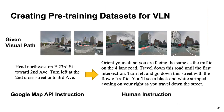The objective is to create a pre-training dataset for VLN where the model can be pre-trained for generalized representation learning for this task, and then fine-tuned on specific VLN datasets for a performance boost. Given a visual path, we want to transfer Google Map API instructions like 'head north on East 23rd Street towards 2nd Avenue' to the human instruction style, while keeping the useful learning signals in the API instruction.